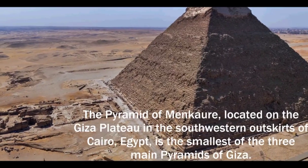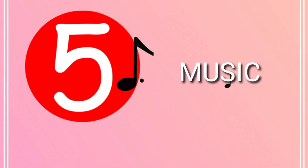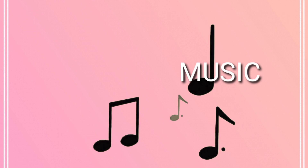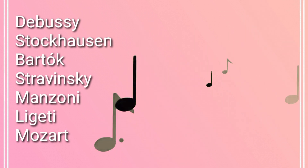Number five: music. In the music of the 20th century, the golden ratio found fertile ground. Debussy, Stockhausen, Bartók, Stravinsky, and Ligeti are just some of the best-known composers who voluntarily chose to use these magical proportions. Listen to these few examples.